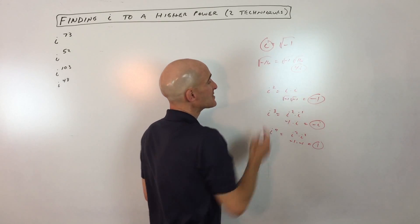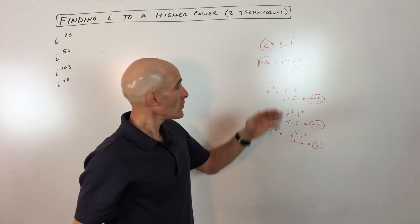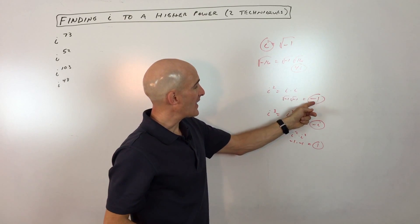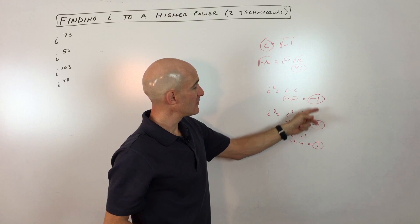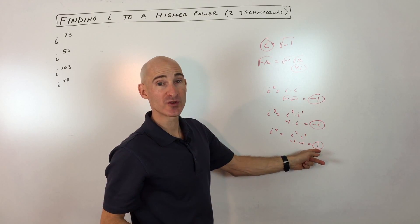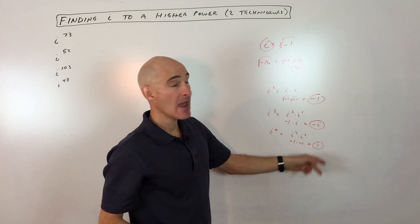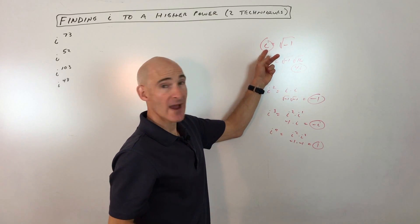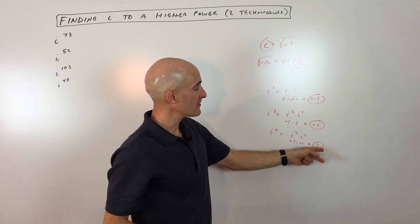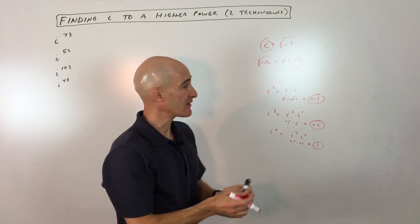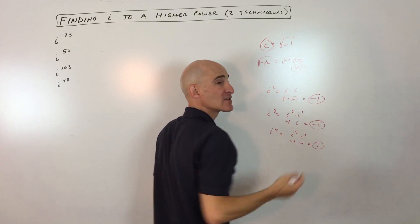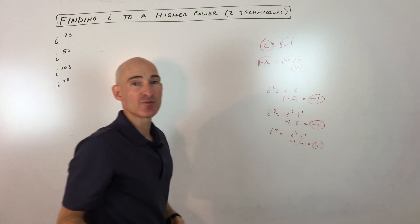So essentially what happens here is that we have i to the first, which is i; i to the second, which is negative 1; i to the third, which is negative i; and i to the fourth, which is 1 — and then it repeats. So i to the fifth would go back to i, i to the sixth, i to the seventh, i to the eighth, and it just keeps repeating like that. So if you can remember this pattern, that's one way to approach these problems.